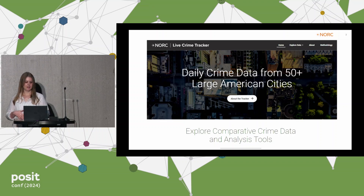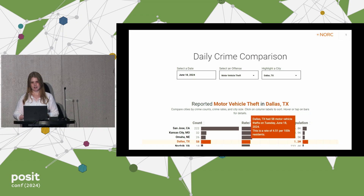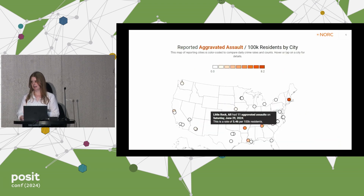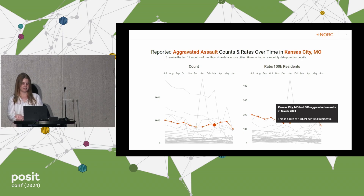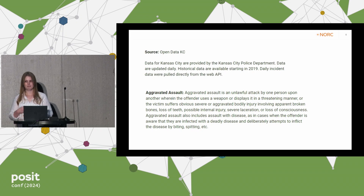This is also a Shiny app. This one has a home page that describes the data contained in it. It has details about different ways users can explore the data and encourages them to find the data in a way that works for them. There are interactive data tables, details when a user is focused on a specific piece of data, an interactive map, and interactive line charts. It also provides detailed information when users make certain selections — such as details about where a city's data come from, or how a specific type of crime is defined.